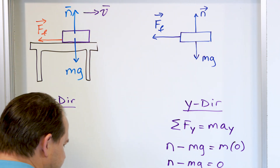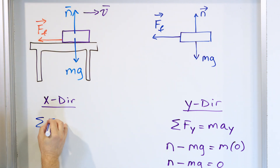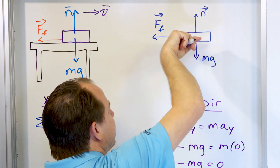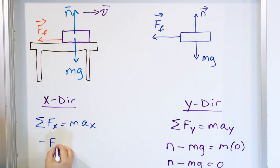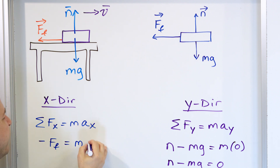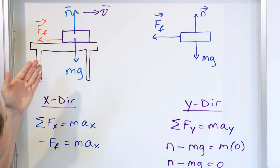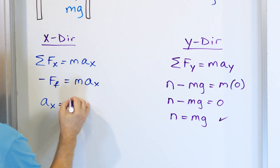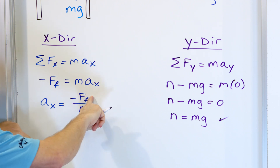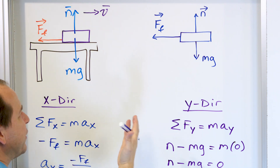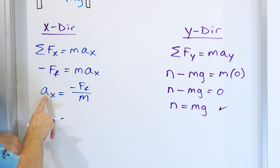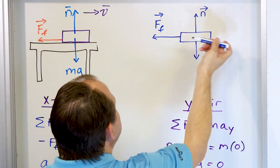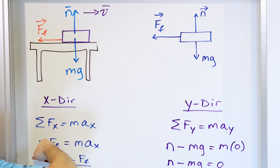Now let's talk about the x direction. The sum of the forces in the x direction is equal to mass times acceleration in the x direction. There's only one force acting in the x direction — the frictional force — which is negative because it acts in the negative x direction. So negative F sub F equals mass times acceleration in x. Solving for acceleration: a sub x equals negative F sub F over m. Because the frictional force is negative, dividing by mass gives a negative acceleration.